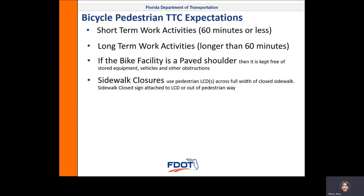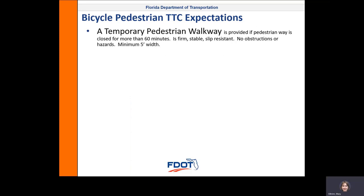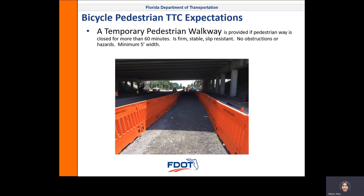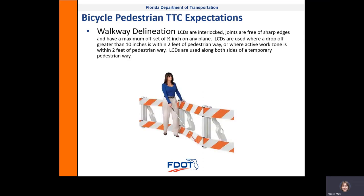Sidewalk closures use pedestrian LCDs across the full width of the closed sidewalk, and a sidewalk closed sign will be attached to the LCD or out of the pedestrian way. A temporary pedestrian walkway is provided if the pedestrian way is closed for more than 60 minutes. It must be firm, stable, slip resistant, have no obstructions or hazards, and a minimum of 5 feet wide. For walkway delineation, LCDs are interlocked, and joints are free of sharp edges with a maximum offset of half an inch on any plane. LCDs are used where a drop-off greater than 10 inches is within 2 feet of the pedestrian way, or where the active work zone is within 2 feet of the pedestrian way. LCDs are used along both sides of a temporary pedestrian way.